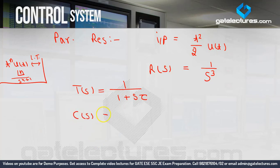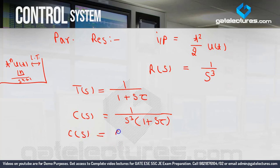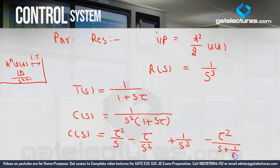Now we perform partial fractions again — but partial fraction is homework for you again; try it and post in the comment section if you have any doubt. The partial fraction of C(S) = tau²/S − tau/S² + 1/S³ − tau²/(S + 1/tau). In control systems, partial fraction is not our focus — what is important is knowing the steady state error and what response comes for a given input.